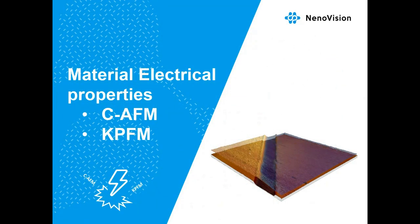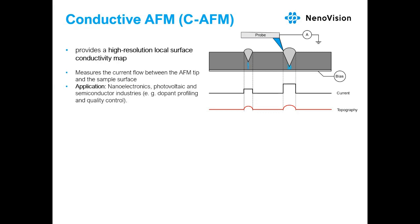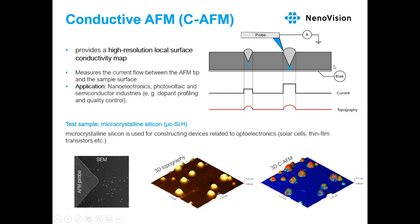Investigation of electrical properties plays an important role especially in the semiconductor field, as the world demands smaller and smaller devices with higher expectations on quality and accuracy. Conductive AFM mapping is a common technique where a bias voltage is applied between the conductive tip and the sample, and the resulting current as well as the topography is measured in contact mode as the tip scans the sample surface — for example, on microcrystalline silicon used in optoelectronic devices such as solar cells or thin-film transistors.